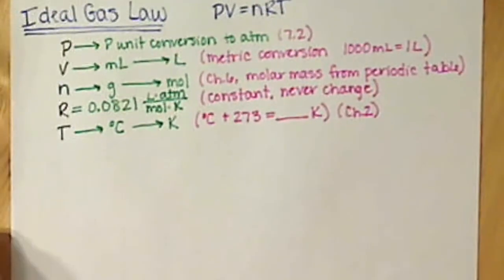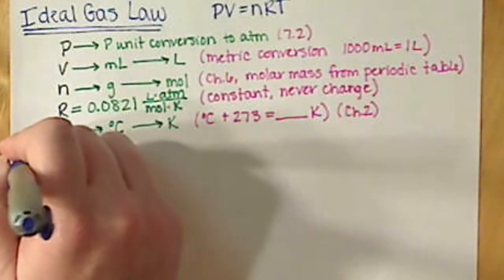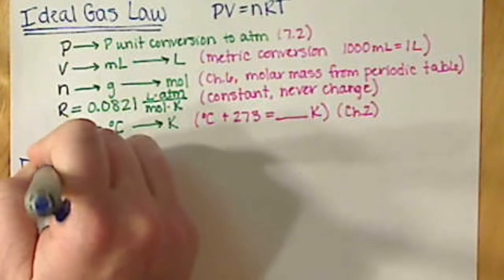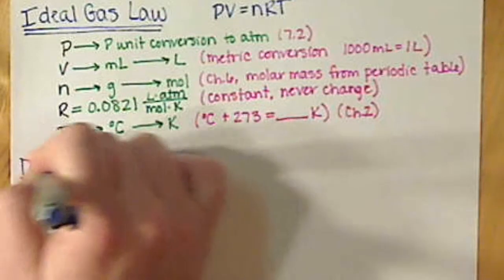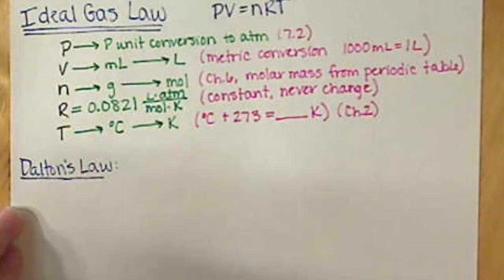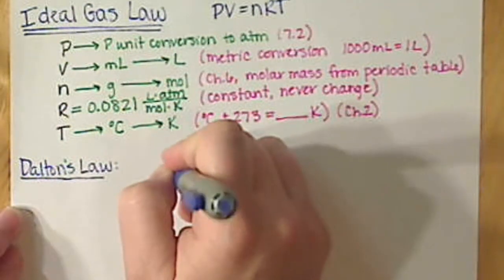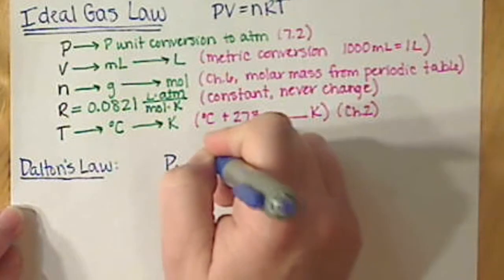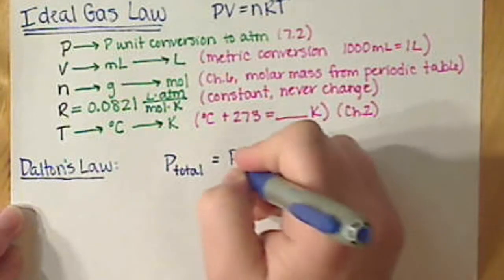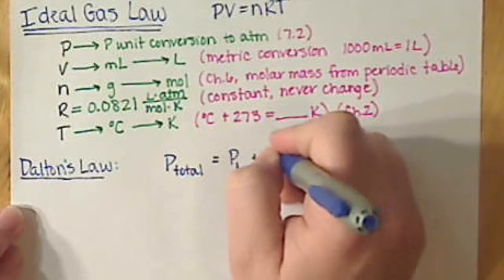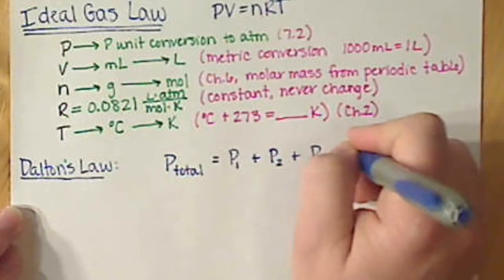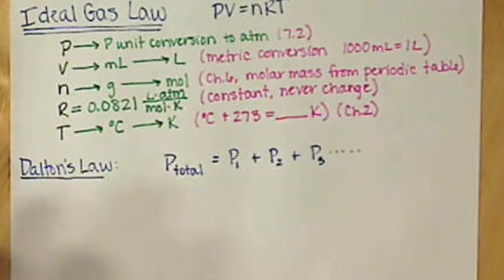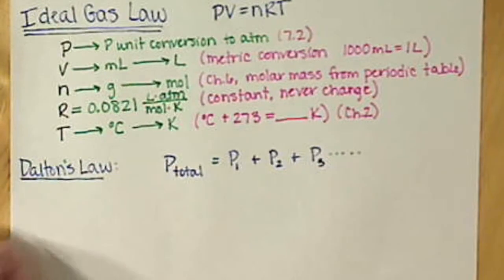Next part of Chapter 7 that's important for us is Dalton's law, his law of partial pressures. Basically we have P total is equal to the partial pressure of one gas plus the partial pressure of a second gas, plus the partial pressure of a third, and so on and so forth for however many gases you have.